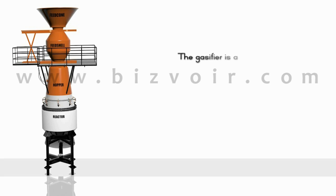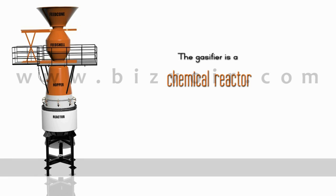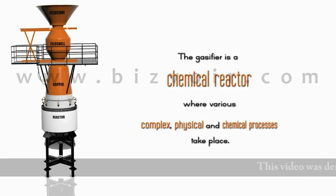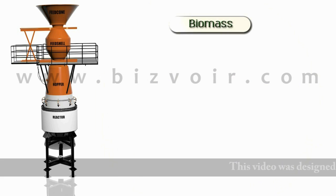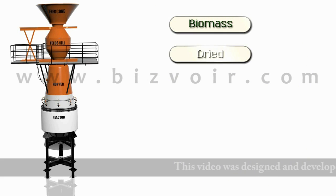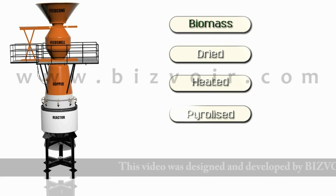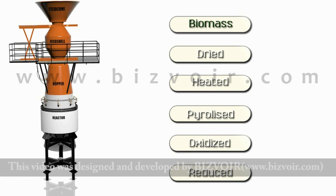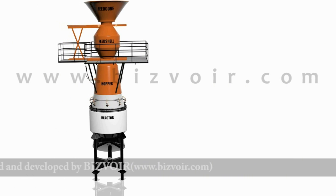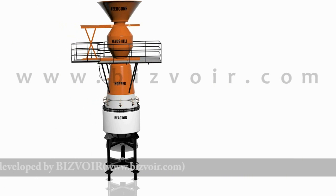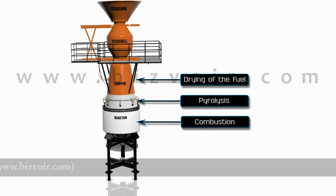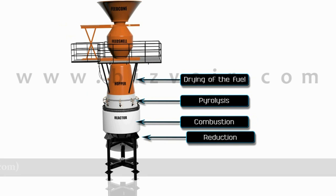The gasifier is essentially a chemical reactor where various complex physical and chemical processes take place. Biomass gets dried, heated, pyrolyzed, partially oxidized, and reduced in this reactor as it flows through it. Four distinct processes take place in a gasifier: drying of the fuel, pyrolysis, combustion, and reduction.